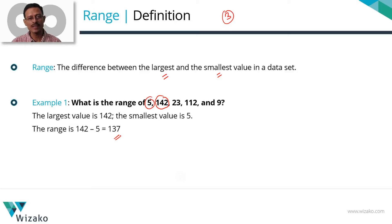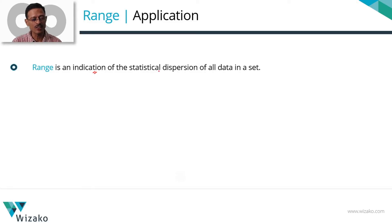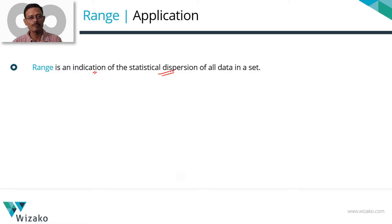Let's quickly look at what does the range signify — what is the application of range? Range is an estimate; it's an indication of the statistical dispersion of the observations in a set of data. If the dispersion is higher, essentially the numbers are far and wide distributed. If the dispersion is lesser, the numbers are closer to each other. So if the range is more, the dispersion is higher; if the range is lesser, the numbers are closer and dispersion is also lesser.